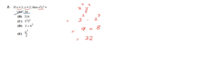Now let us check the options. Option A is 36 — wrong. Option B is 1216 — wrong. For option C we calculate 3 cubed into 2 squared: 3 cubed is 27, and 2 squared is 4, so 27 times 4 gives us 108, which is not equal to 72. So option C is cancelled out.